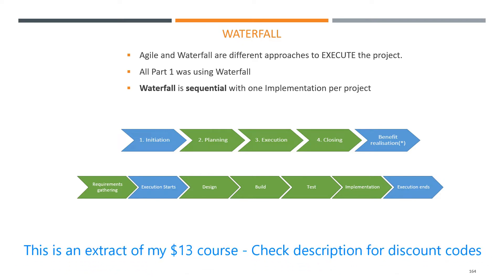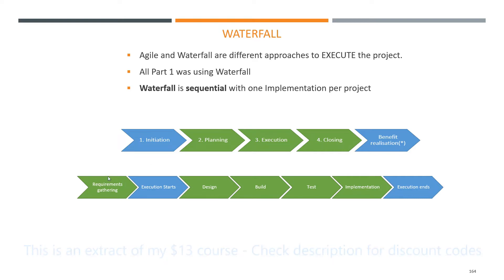In part one we saw that for all projects, especially IT projects, the execution is quite standard. The execution is the requirement gathering, which is done in planning. And then the execution is more or less: design something, you build something, you test it, and after you implement it. So Agile and Waterfall are two different ways to go through this cycle here.